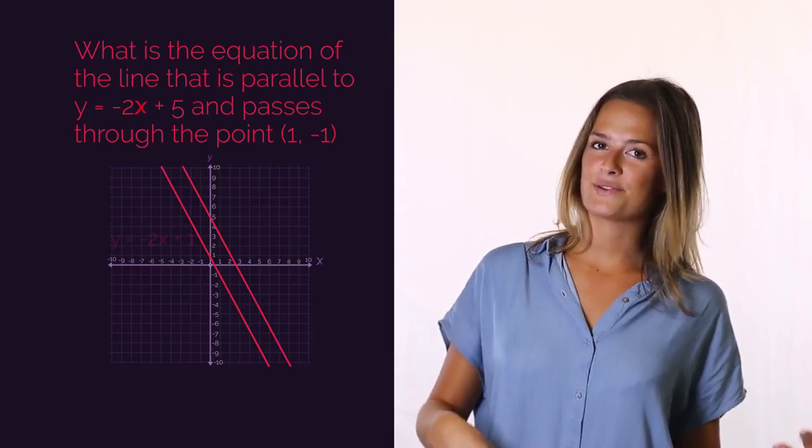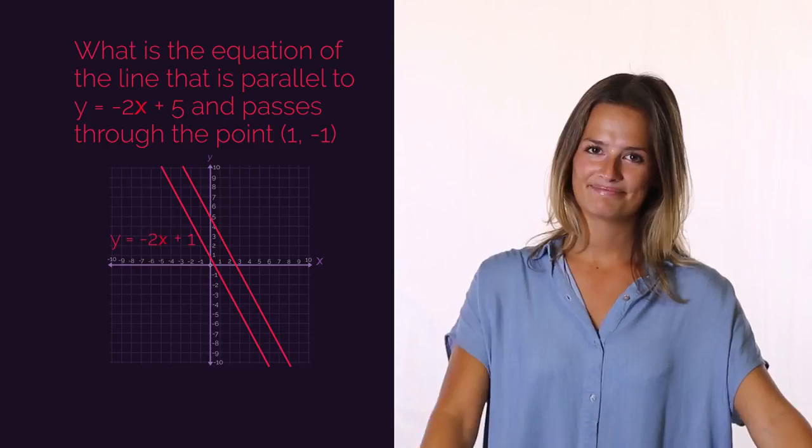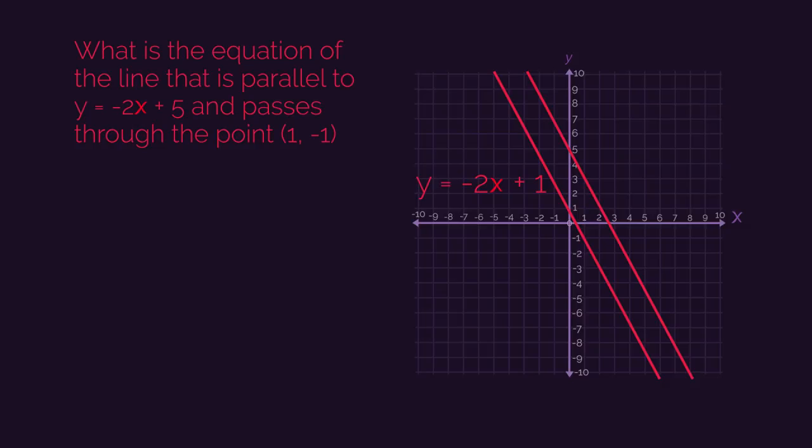Did you get y equals negative 2x plus 1? Parallel lines means that the gradient is also negative 2. So we already have y equals negative 2x plus c, and we just need to work out the y-intercept. Using 1 negative 1 from the question, we substitute in x is 1 and y is negative 1 into our equation, we get negative 1 equals negative 2 multiplied by 1 plus c.